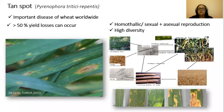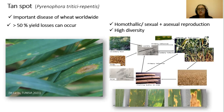Tan spot is an important disease of wheat worldwide that can cause up to 50% yield losses under favorable conditions. The causal agent of the disease is the necrotrophic fungus Pyrenophora tritici-repentis, which undergoes sexual and asexual reproductions, leading to high diversity.